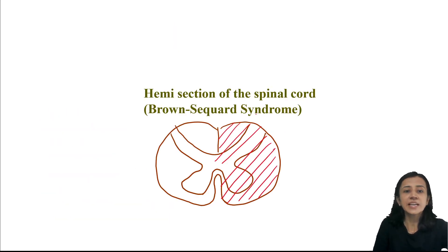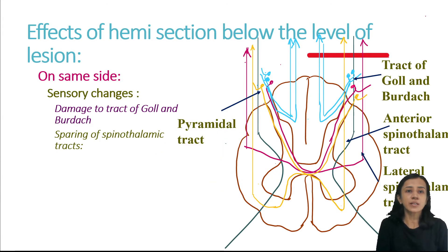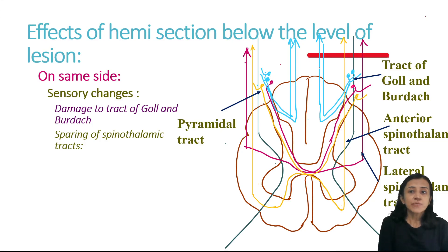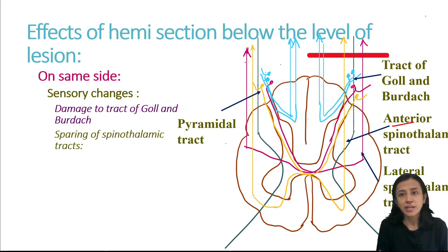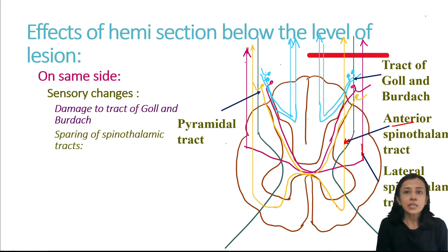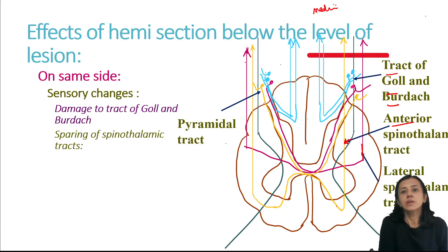To understand hemisection, we recall the relevant tracts. The anterior spinothalamic tract and lateral spinothalamic tract cross within the spinal cord. The fasciculus gracilis and fasciculus cuneatus (tracts of Goll and Burdach) do not cross at the spinal segment — they cross after the medulla. Corticospinal pyramidal tracts also cross below the medulla. With a lesion on one side, the tracts of Goll and Burdach on the same side are damaged.